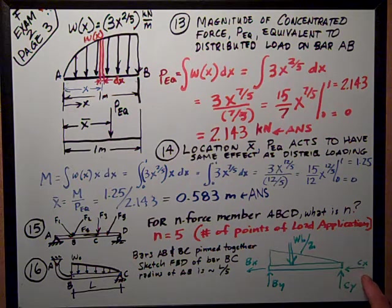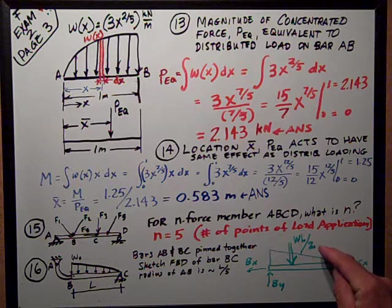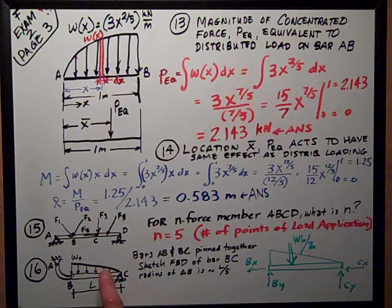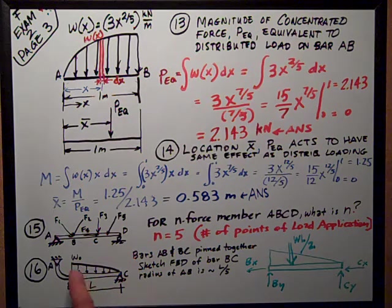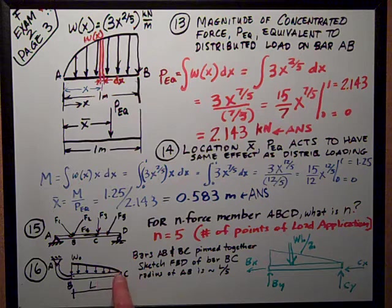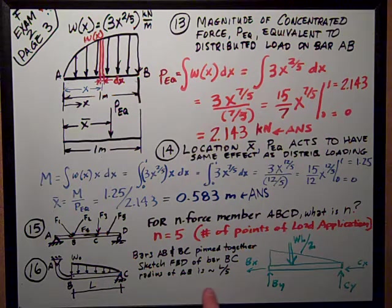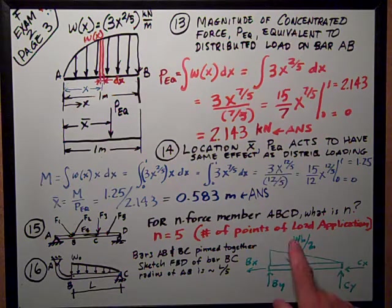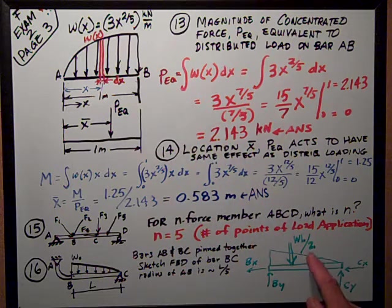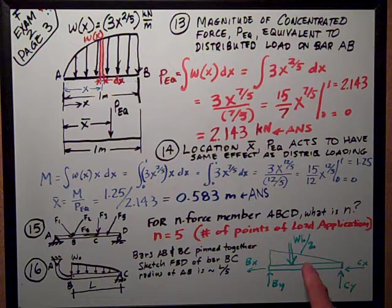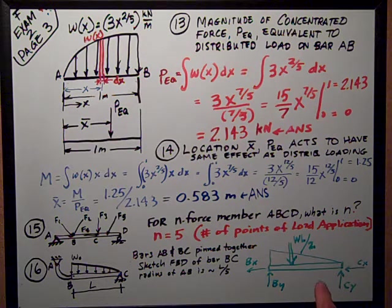And, then I have to resolve my distributed loading, which is W0 sloping down to nothing at the point C, into an equivalent load, kind of like I did up here. It's WL over 2 is the magnitude of that load. So, this is my free body diagram.